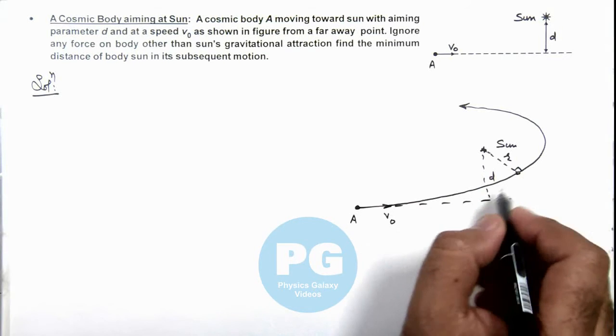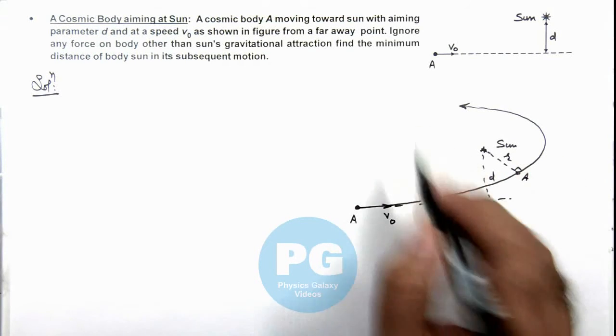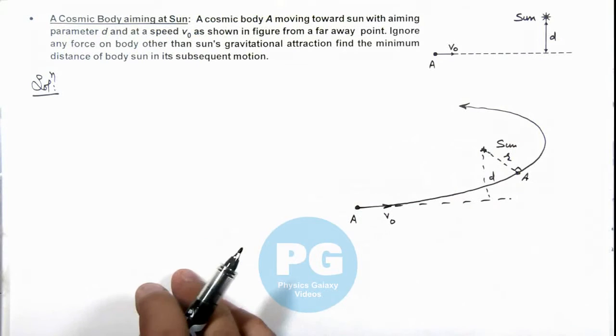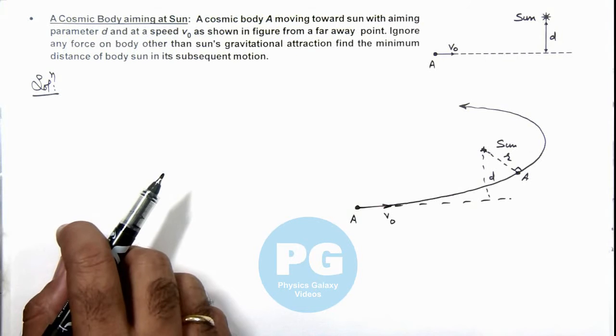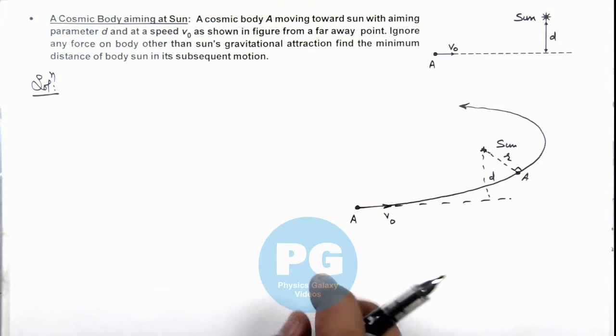We are required to find this r, the distance of closest approach of this body from sun in its trajectory when it is moving. So in this situation the value of r we can calculate by using conservation of energy as well as conservation of angular momentum.